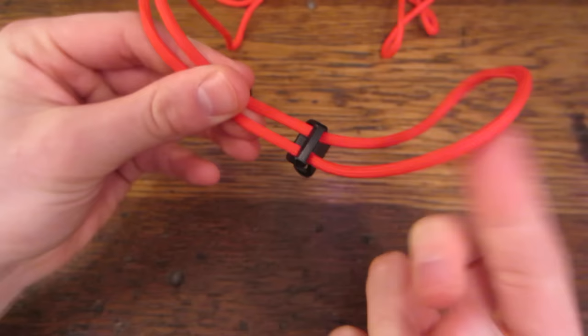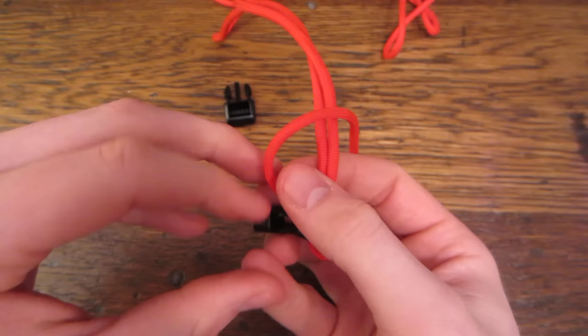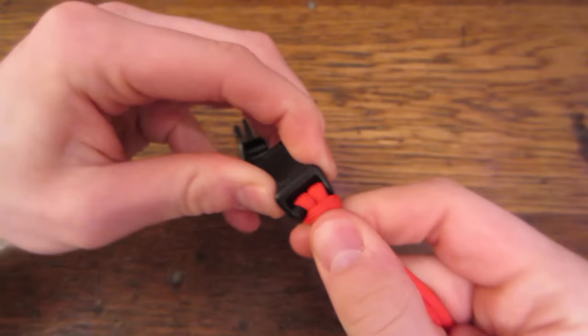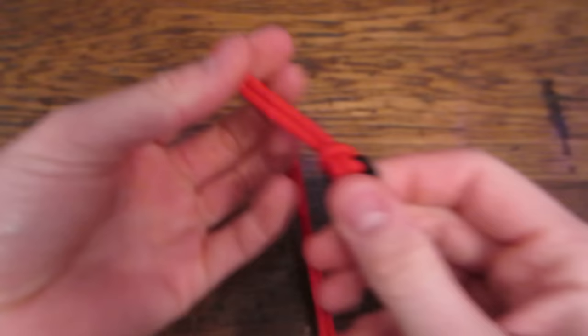We're going to reach through the bottom of this loop that we've now created and we're going to grab the two tag ends and pull them through. So this is what it should look like and we're just going to pull down on that so we have a nice clean start to our bracelet.